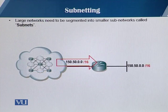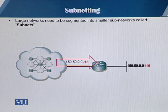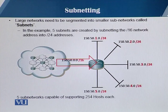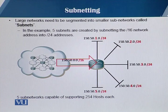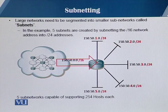The concept of subnetting basically divides a large network into multiple small subnetworks, called subnets. We can divide this slash 16 network into multiple subnets — let's divide it into five subnets. The network portion has gone from slash 16 to slash 24. As you can see on the slide, all the subnets in this network are able to support around 254 hosts. These are the subnet IDs assigned to each subnet.